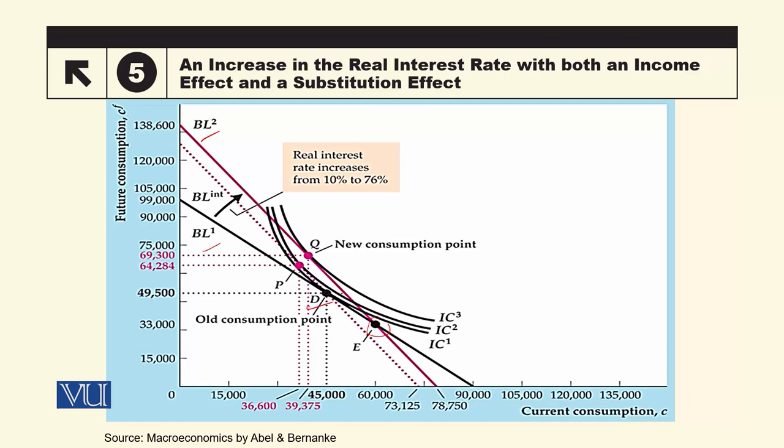جب interest rate میں اضافہ ہو گیا تو budget line BL2 کی ہوگی اور وہ D سے shift کر کے point Q پر چلا گیا۔ Q is the new equilibrium point جہاں budget line اور indifference curve tangent ہو رہے ہیں — highest possible satisfaction level۔ D اور Q کو compare کریں: D پر current consumption 45,000 ہے اور Q پر 39,375 — current consumption overall کم ہو گئی ہے کیونکہ interest rate زیادہ ہو گیا ہے۔